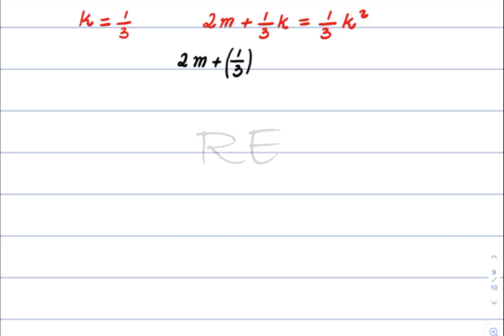2m plus one-third times one-third is equal to one-third times one-third squared. One-third squared means one-third times one-third.